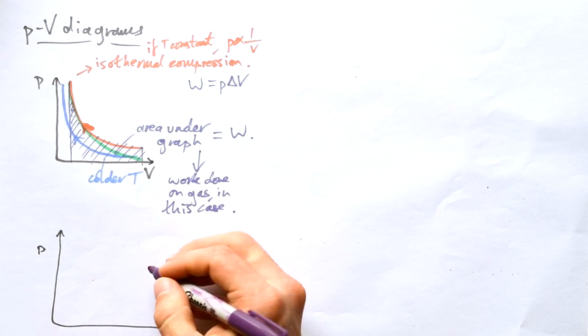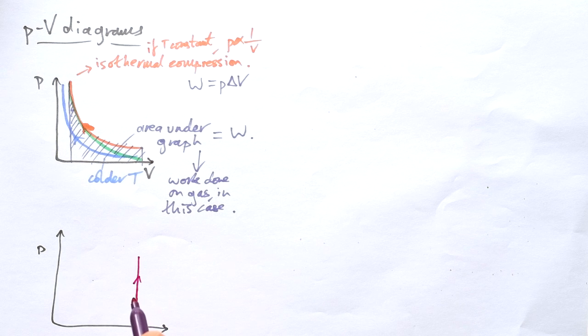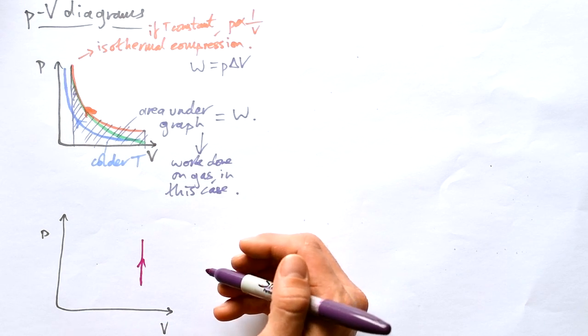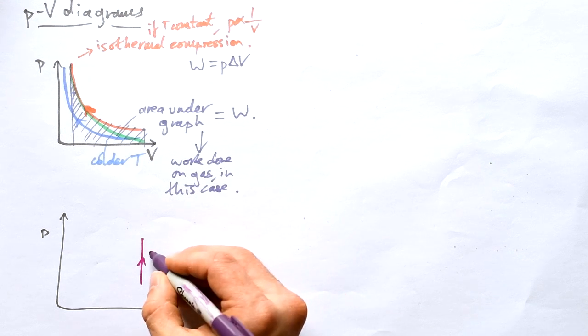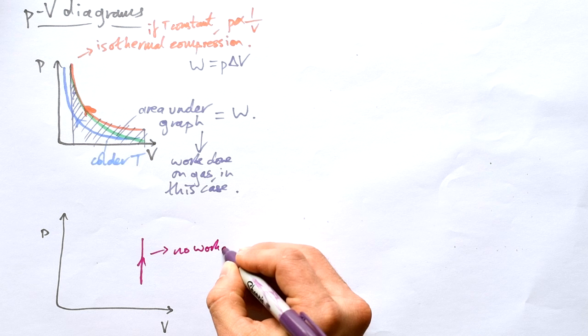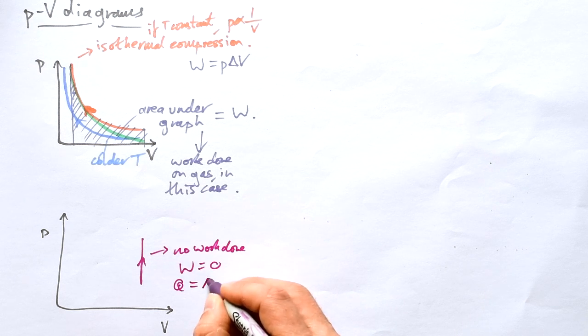Okay, so what if I had a PV graph and all I had was a straight line going up? So we can see that the volume is staying the same. Well, what do we say we know is the case if volume stays the same? No work is being done at all. So W equals zero. And so we can say that Q is equal to delta U.